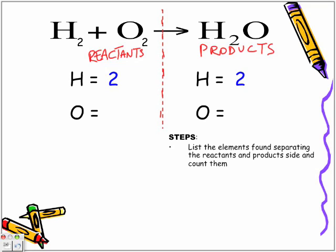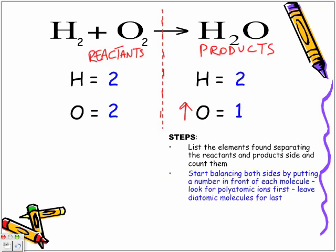Now how many oxygens do we have on the reactant side? We have two oxygens. But on the product side we only have one oxygen, which means we need to increase the amount of oxygen on that side. To balance, we put a number in front of each molecule. A thing to keep in mind: look for polyatomic ions first and leave diatomic molecules for last.